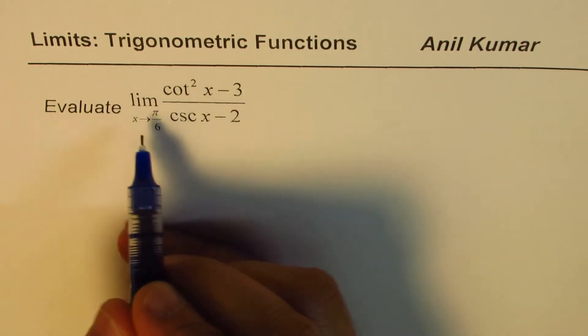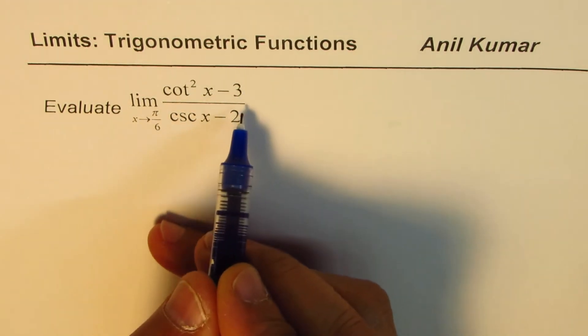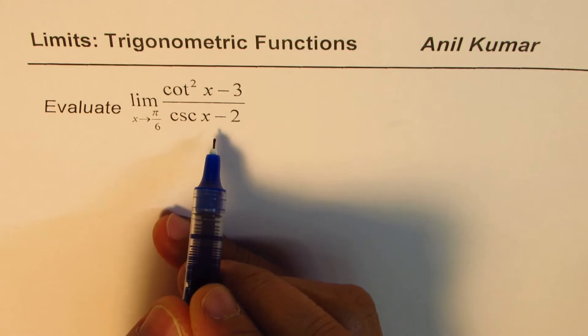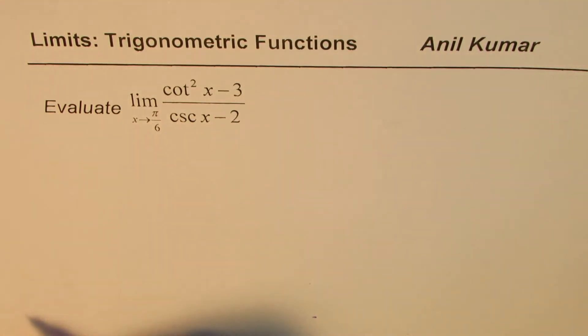Now if I substitute π/6 here, I get 0/0. You can check this out. So it is in indeterminate form. In that case, we need to simplify this trigonometric function using some identities.